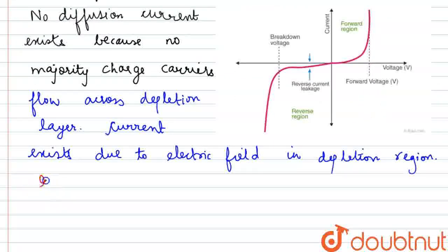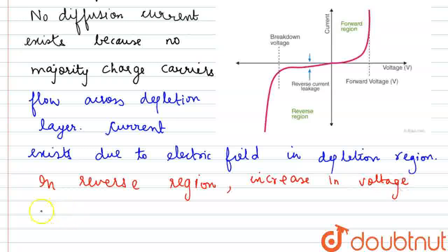Thus we can write here: in reverse region, increase in voltage does not cause flow of majority carriers.